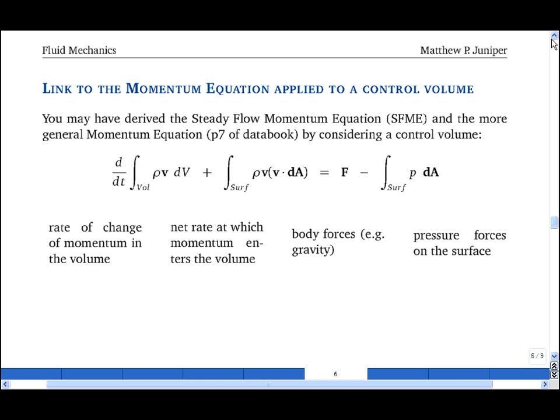It's worth comparing this with the momentum equation expressed in terms of a control volume. Here we have some volume of fluid with a certain surface and volume. The first term is the rate of change of momentum in the volume. The second term is the rate at which momentum enters the volume. The third term are the body forces, such as gravity. And the fourth term is the integration of the pressure forces around the surface.